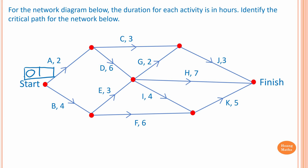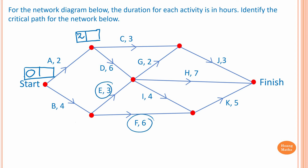To start activity C or D we need to complete activity A first: zero plus two is two, so the earliest starting time for C or D is two. To work out the earliest starting time for E and F: zero plus four is four.